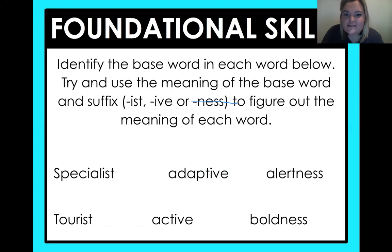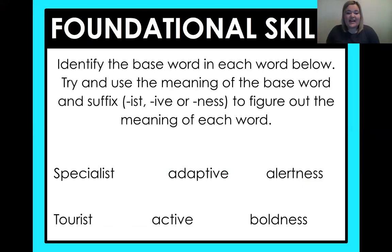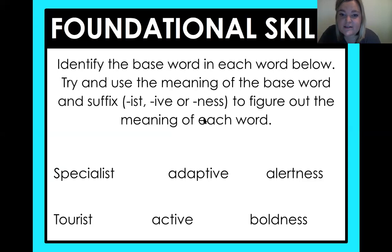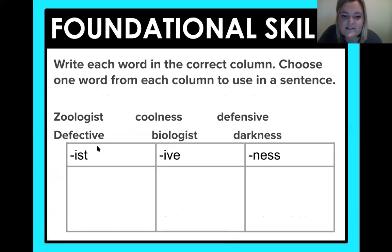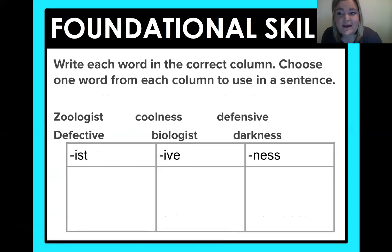Now let's look at what you'll be doing on your own today. You will be identifying the base word — that's the word that came before the suffix in each word. Try and use the meaning of the base word and the suffix, either -ist, -ive, or -ness, to figure out the meaning of each word. So you have specialist, adaptive, alertness, and then three other ones to work with. You're also going to write each word in the correct column — each column has one of the suffixes. Then choose one word from each column and use it in a sentence to show you know what the word means. Fourth graders, I know you can do this — you were already killing it with me at the beginning.